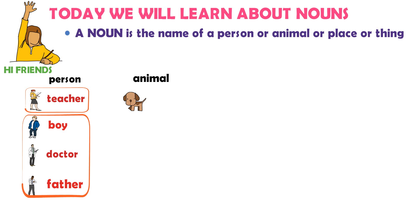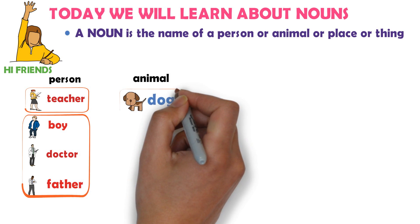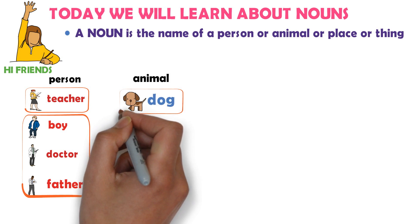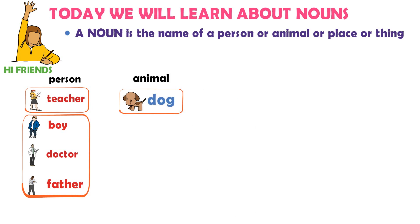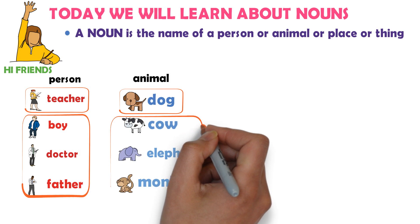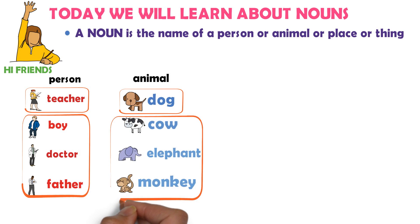Animal example: Dog is the name of an animal, so dog is a noun. Cow is a name of an animal. Elephant is a name of an animal. Monkey is a name of an animal. So cow, elephant, and monkey are nouns.